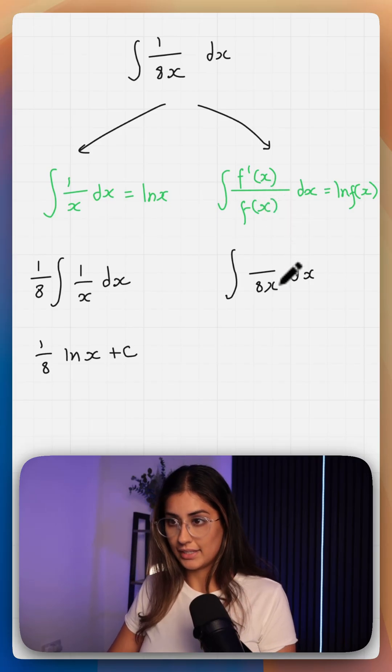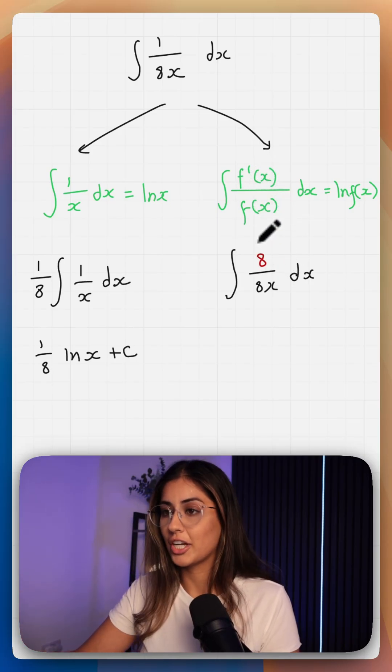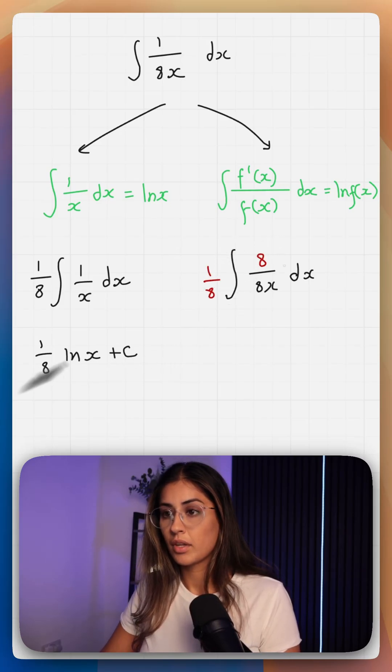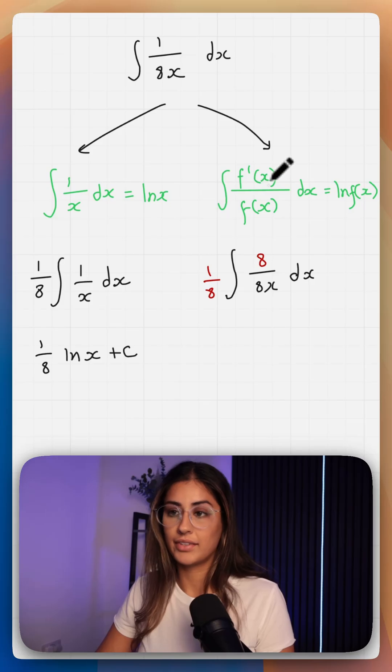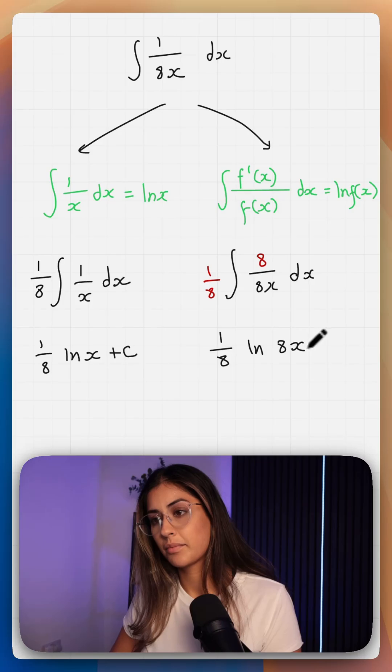On the bottom we have f of x which is 8x. If we differentiate it we get 8. So it's in this form but we can't just change it, we have to account for the 8 on the top and therefore we divide by 8. So now this is in the form of f dash over f and that will give us 1 over 8 ln of 8x plus c.